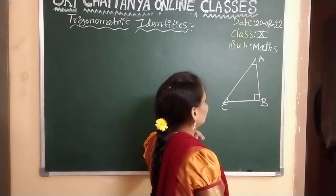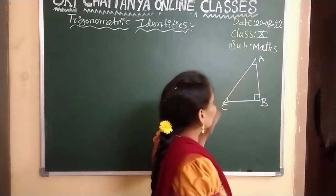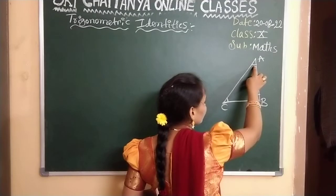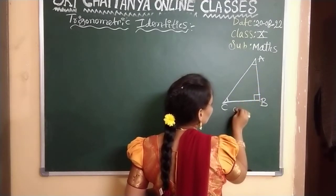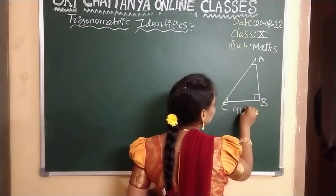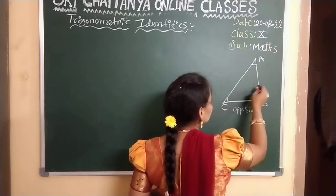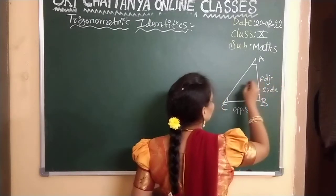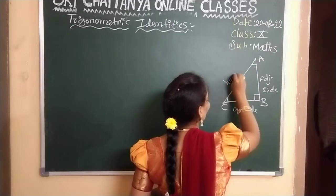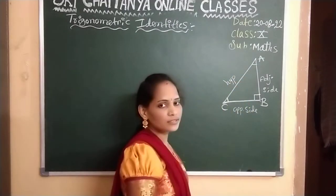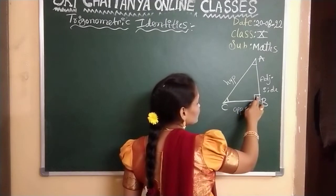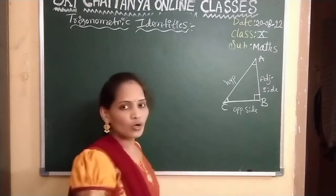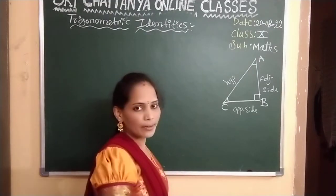If you talk with respect to angle A, the side opposite to angle A is the opposite side, this is the adjacent side, and this is the hypotenuse. Always remember, the side opposite to the right angle is the hypotenuse.